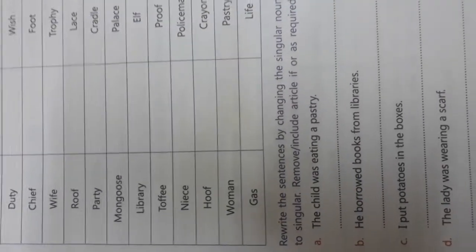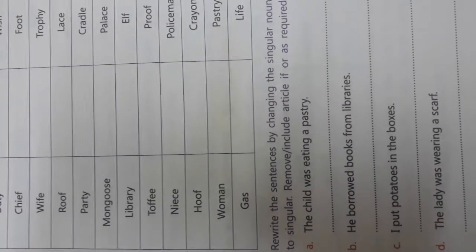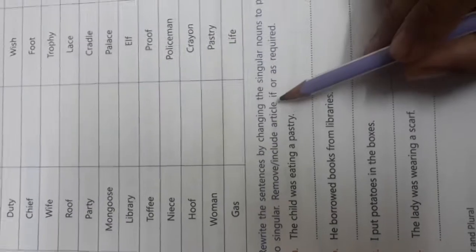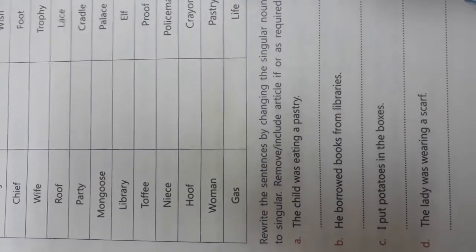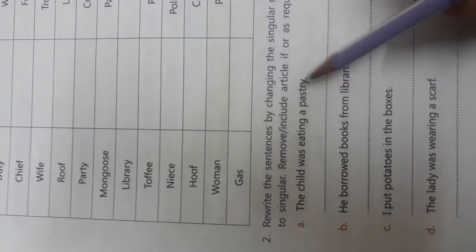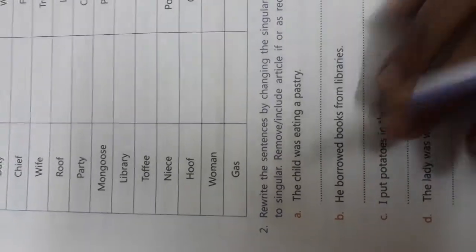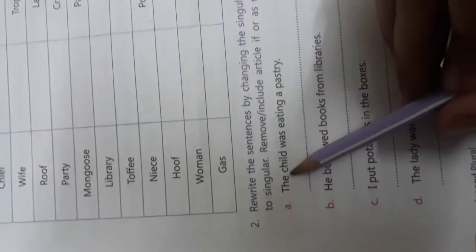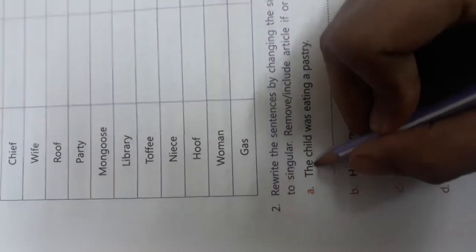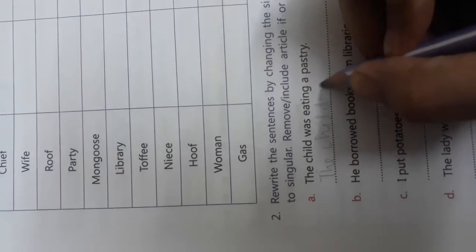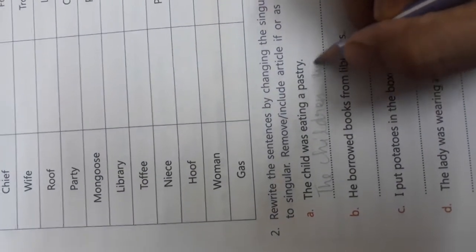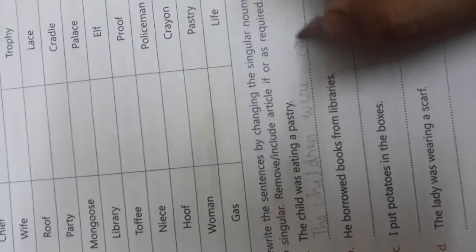The plural noun is given as singular and the singular noun is given as plural. We will also change the articles and verbs like was, are, is accordingly. Let's start with the first one: 'The child was eating a pastry.' This becomes: 'The children were eating pastries.'